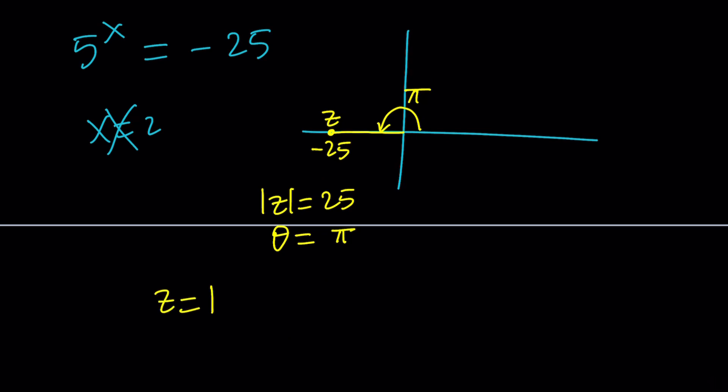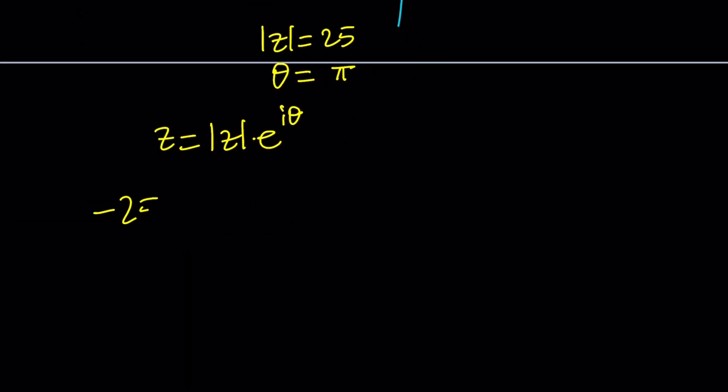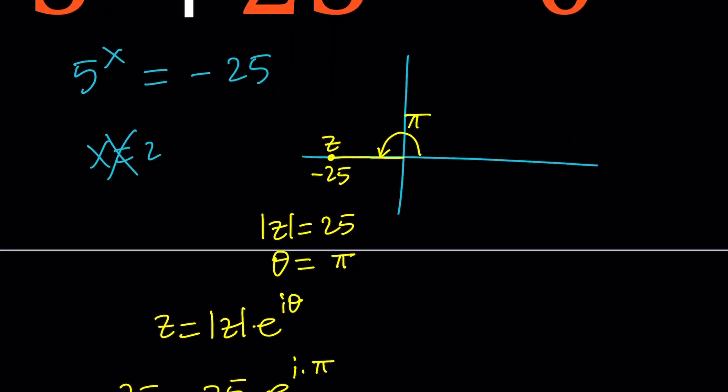So knowing those two things, we can basically write z as absolute value of z times e to the power i theta, or r times e to the power i theta, same thing. So we can go ahead and write negative 25 as follows. The absolute value of negative 25 is positive 25, and then e to the power i times pi, which is our angle or argument. But pi is not the only angle for which this is true. There are infinitely many values, because think about it. You can just add 2 pi to this, and it's going to bring you to the same point. So pi is going to work. Pi plus 2 pi, pi plus 4 pi. In other words, pi plus any multiple of 2 pi is going to work.